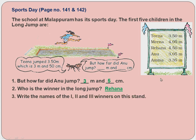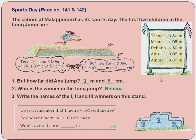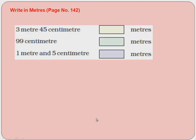Rehana jumped the most, so Rehana is first. Second is Mina. For third place, compare 3.50, 3.05, and 3.35 — Tina jumped the most among these, so Tina is third. Also remember: 1 meter is 100 centimeters, so 1 centimeter is 1/100th of a meter, written as 0.01 meters.